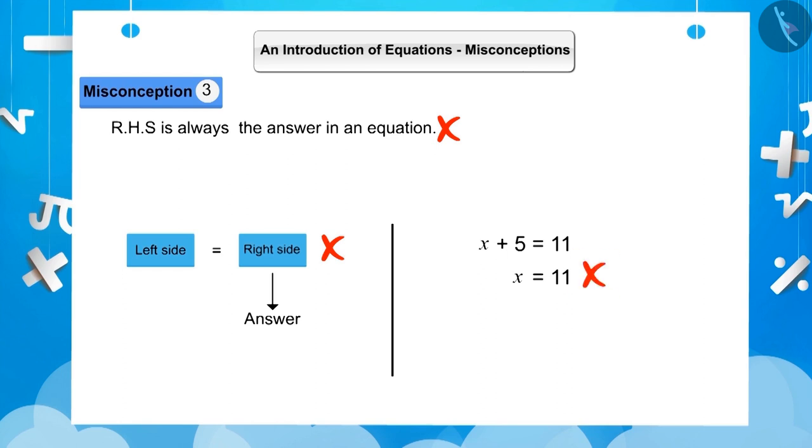The correct understanding is that the value of x plus 5 in this equation is equal to 11, which when solved will give the value of x.